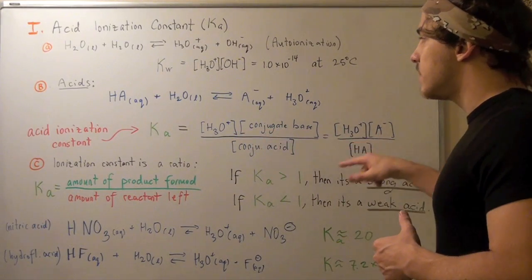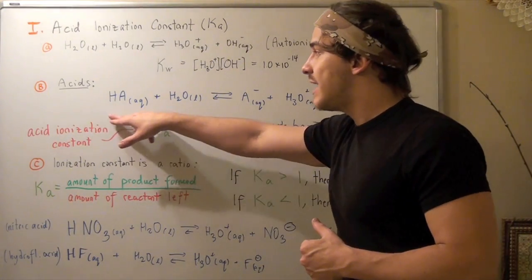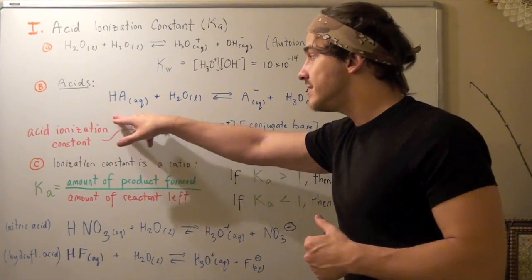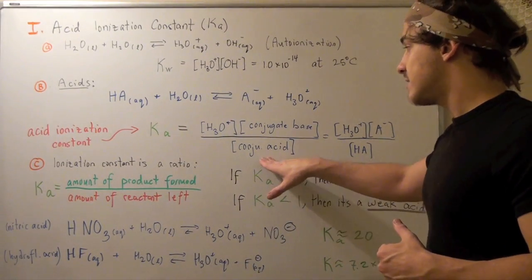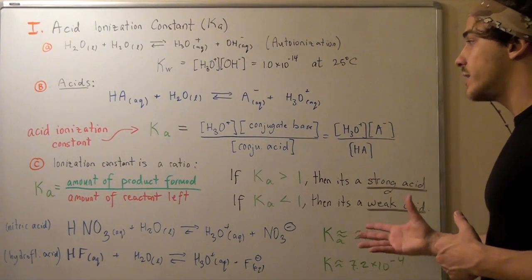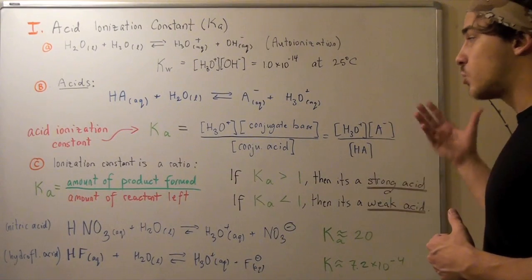On the bottom, since we have HA in the aqueous state, our conjugate acid, we must include it as well. So HA gets incorporated into our equilibrium constant expression.